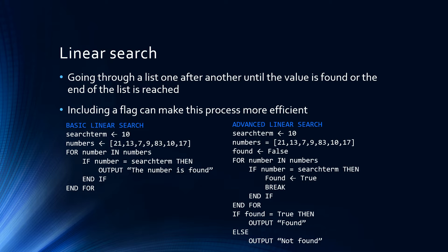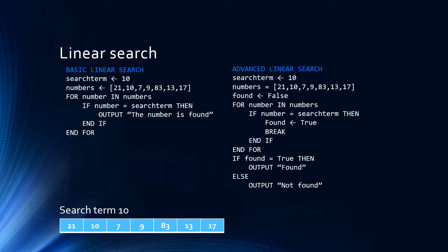This allows us to program an algorithm that will stop if we find the number. This may not seem like a big deal with the example we see here, but if there are many searches taking place with a very long list, this could save a lot of time. The algorithm on the left, after finding the value, would continue to search through the rest of the list. If the list were really long, that would take much longer than the seemingly longer-in-code algorithm on the right, which stops searching once it finds its value.